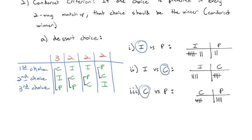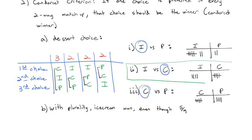Notice what's happened here is with plurality ice cream won. Even though 5 out of 9, which is a majority, looking at this middle row, 5 out of 9 people, a majority of them would prefer cake over ice cream.